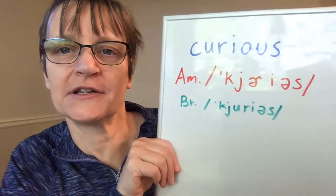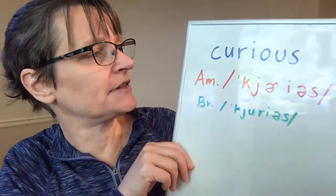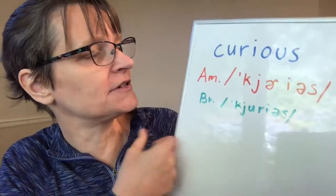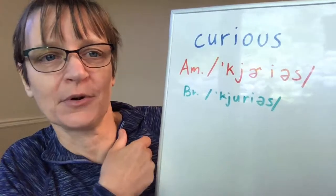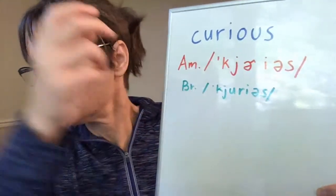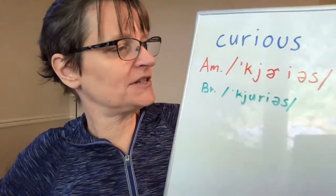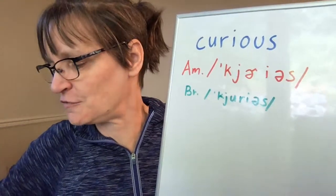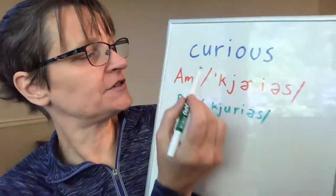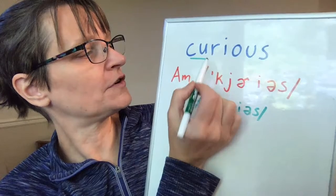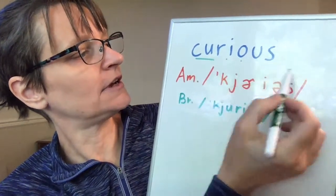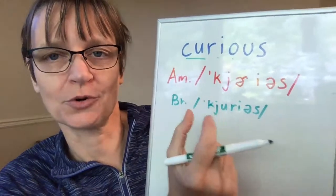So first let's look at the word 'curious.' This is the adjective — someone can be curious, it describes the person or the thing — and we'll look at both American English pronunciation and British English pronunciation for this word. In both cases we have first syllable stress, so the first syllable is long, and then 'curious' — the second two syllables are shorter and reduced.